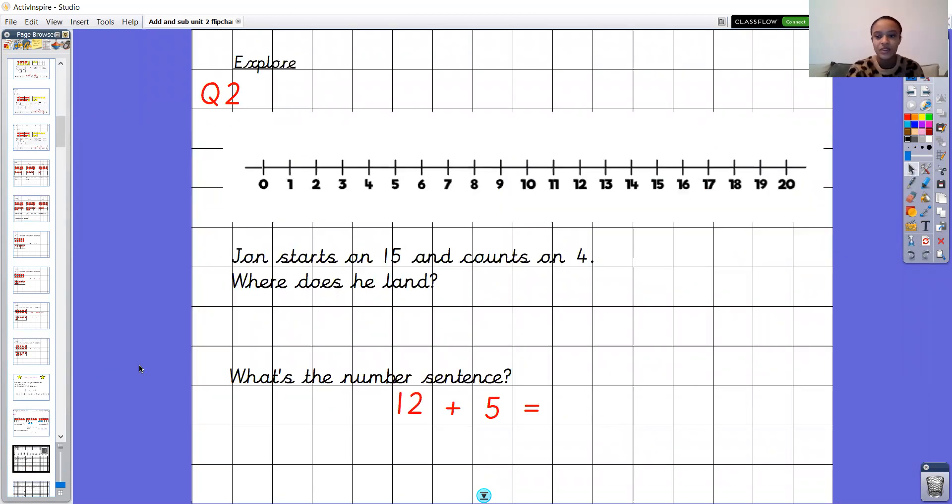Right question two. Okay so another one adding by counting on, this time using a number line. Okay so it says John starts on 15 and he counts on four. Where does he land? Okay so John starts on 15, he counts on four. Where does he land? Then what's the number sentence? So pause the video and have a go at that one now.